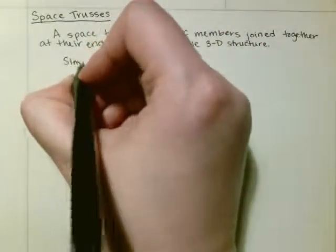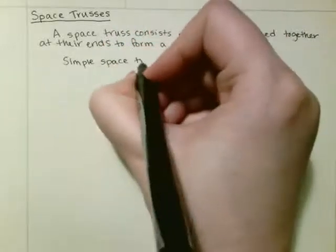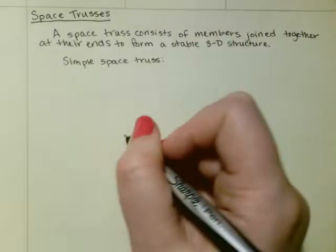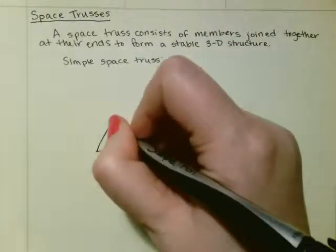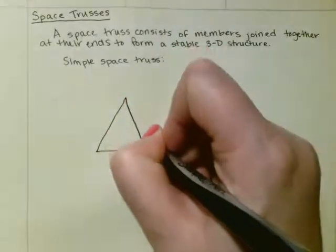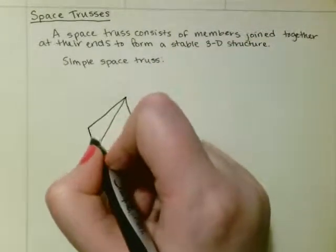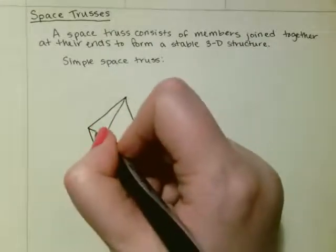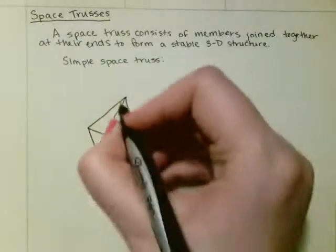A simple space truss is basically a 3D triangle. So remember forming a triangle like a pyramid. That's a simple space truss.